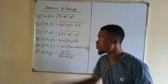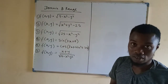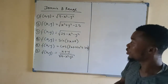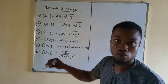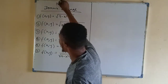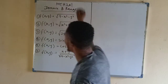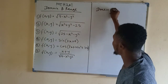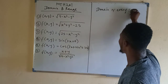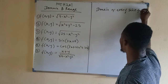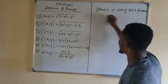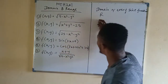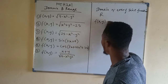I will solve number 4 and 5 easily because they are very easy. This one you don't need to solve anything. When you are asked to find the domain and range of sin and cos, you can easily get the answers. The domain of every sin function is all real numbers. So the domain of f(x,y) equal to...